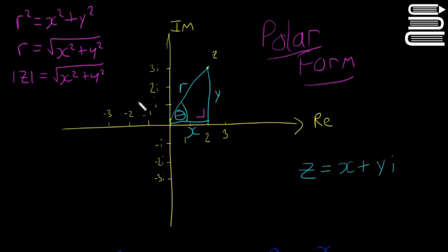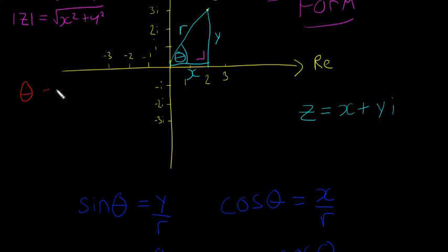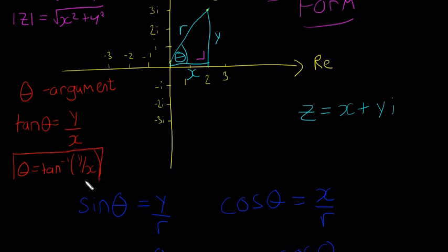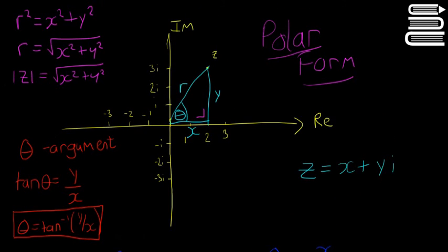We call θ the argument — so if you see that in a question, don't be confused, it's just the angle. It always makes the angle with the real axis. Since tan θ = opposite/adjacent = y/x, we get θ = arctan(y/x), which is the inverse tan button on your calculator. That gives us the angle.